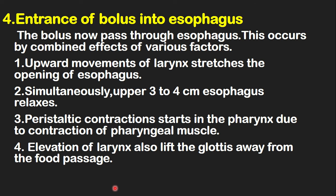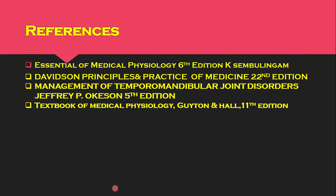The bolus is now ready to pass through the esophagus. This occurs by the combined effects of various factors: the upward movement of the larynx stretches the opening of the esophagus, and simultaneously the 3 to 4 cm esophageal sphincter relaxes. Peristaltic contraction starting in the pharynx due to pharyngeal muscle contraction propels the bolus to enter into the esophagus. The elevation of the larynx also lifts the glottis away from the food passage. This completes the overview of mastication and deglutition.